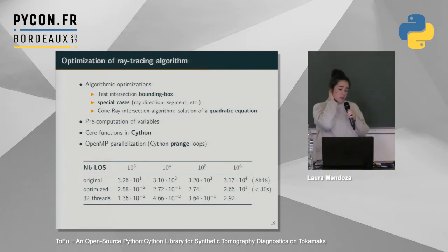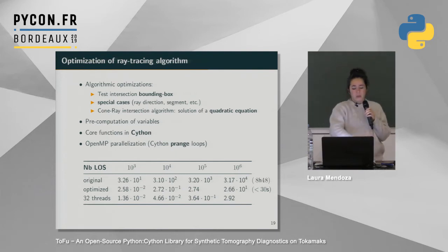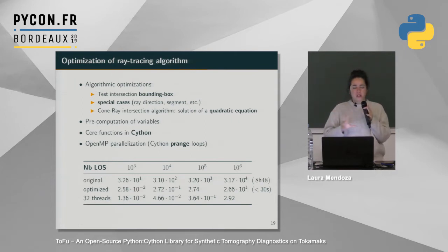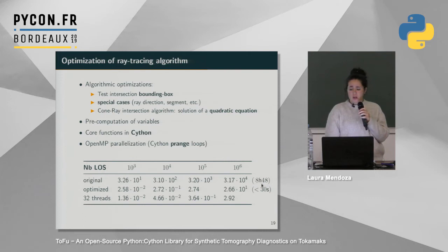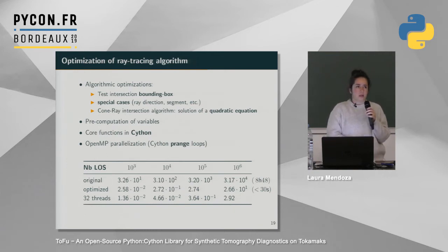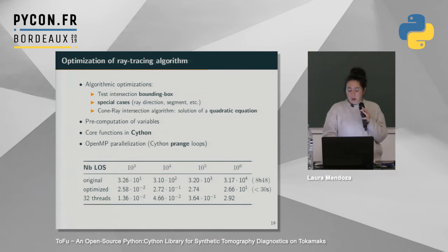The results were impressive. The original code was so slow I couldn't even benchmark it on the first slide. After implementing a rough Cython version it was the starting point — for a million lines of sight intersecting with the whole geometry it was taking almost 10 hours. After optimizing — mostly through mathematical improvements — it takes less than 30 seconds. With parallelization it scales with number of threads: about 3 seconds on 32 threads. This means results can be obtained almost directly from experiments.